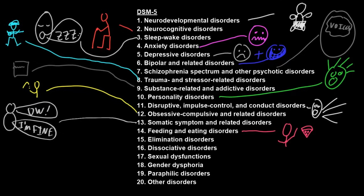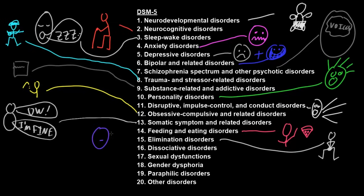The elimination disorders involve distress or disability from urination or defecation at inappropriate times or places. The dissociative disorders involve distress or disability from abnormalities of identity or memory. Some of the people with these disorders seem to have multiple personalities, or may have lost memory for parts of their lives.